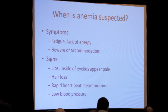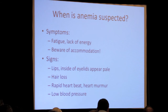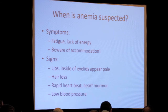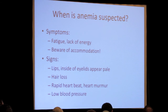Anemia can also be suspected by signs that your doctor might see in the clinic. This can include the inside of your eyes or your lips being very pale, or just overall not very good color in your skin. Chronic hair loss can be associated with anemia. You might also have a more rapid heartbeat than normal, a heart murmur when your doctor listens to your heart, or low blood pressure. These can all be signs suggesting you could be anemic.